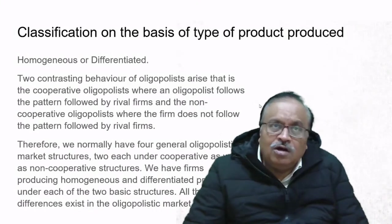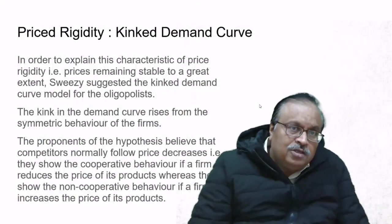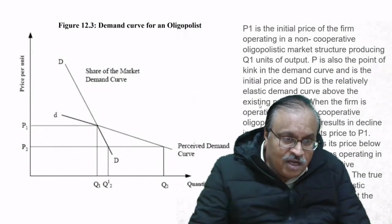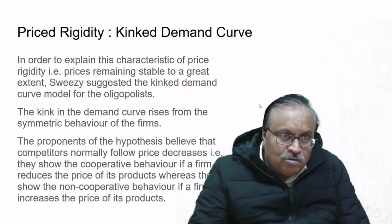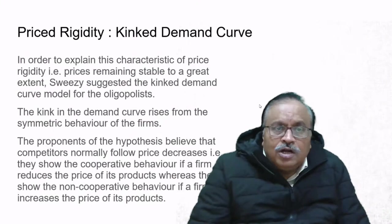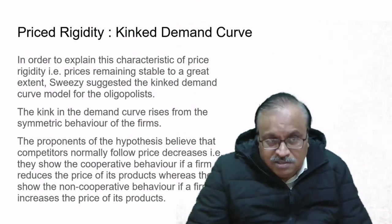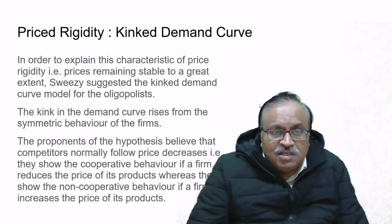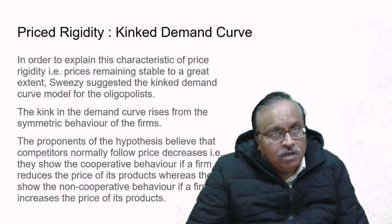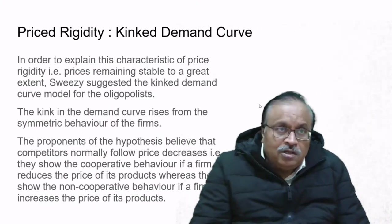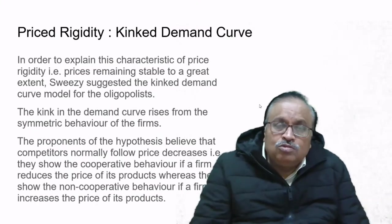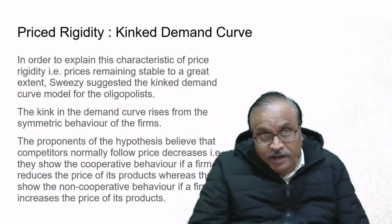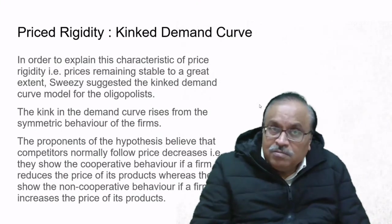Now there is the kinked demand curve. This graph shows the kink in demand. To explain the characteristic of price rigidity—prices remaining stable to a great extent—Sweezy suggested the kinked demand curve model for the oligopolist. The demand curve is supposed to continue normally, but at a particular point it kinks—it turns. The kink means the demand gets turned, becoming lower or higher depending on the situation.